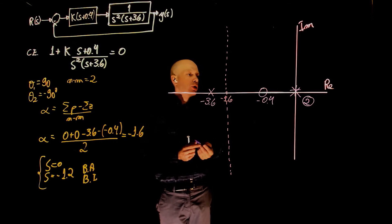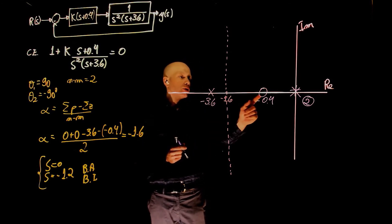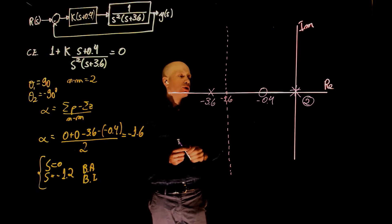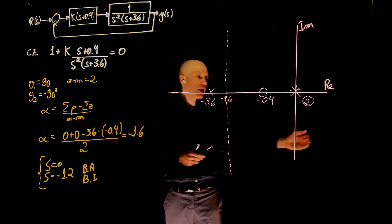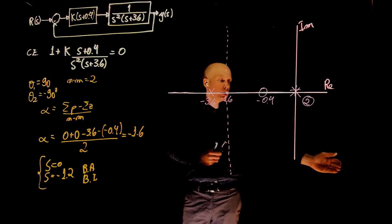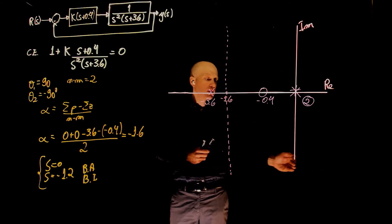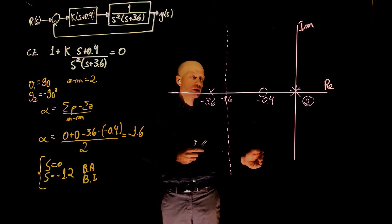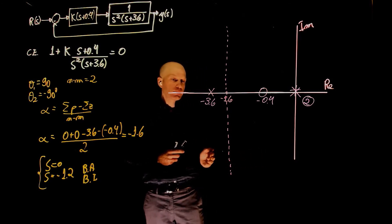Now, where is the root locus? The root locus is between this pole and this zero, because this is the only portion of the real axis with an odd number of poles and zeros. Again, if you start counting from plus infinity, here the count is zero, here the count is two, up to negative 0.4, where the count becomes negative 3, up to negative 3.6, where the count is negative 4. It's plus 4.